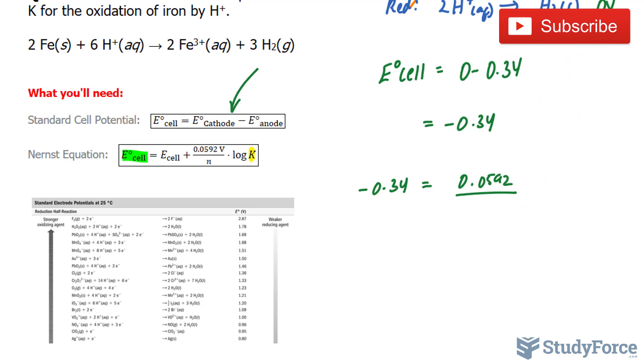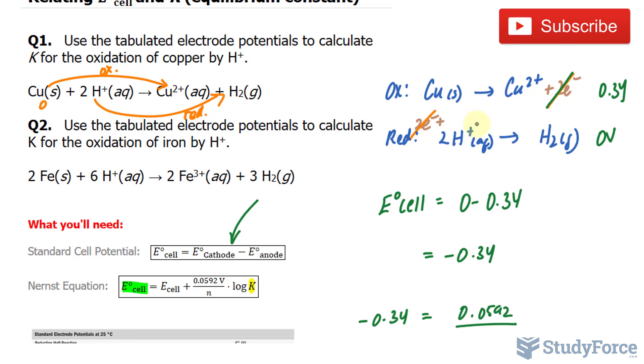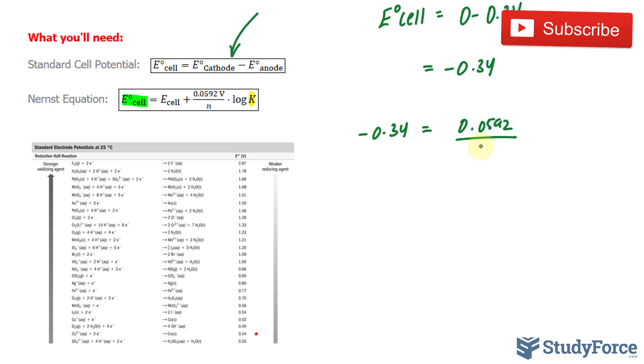N is the amount of electrons that were cancelled out—notice that I've cancelled them out. So I'll put 2 log K. Let's solve for K.